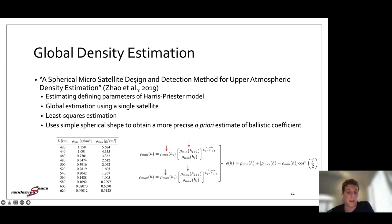Finally, another global density estimation was based on the Harris-Priester density model. And this model uses tabulations of minimum and maximum densities and an interpolation between them based on the geodetic altitude of the spacecraft. And what this paper did is they used a single spherical spacecraft, so it had a pretty precise knowledge of the ballistic coefficient ahead of time, and estimated minimum and maximum bounds at two separate altitudes to piece together a density estimate. And this used least squares estimation method.